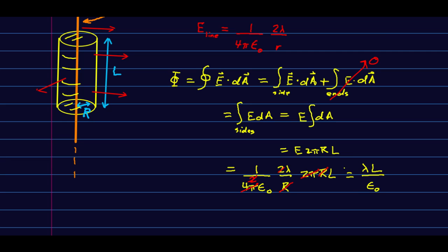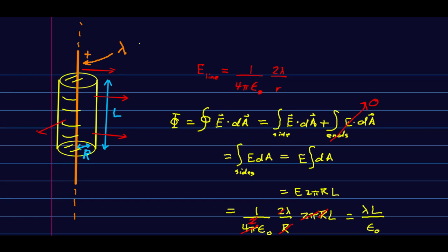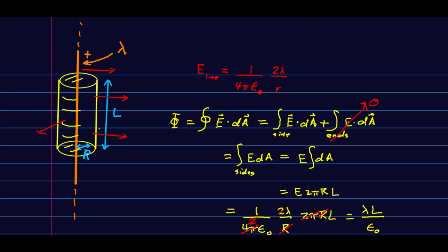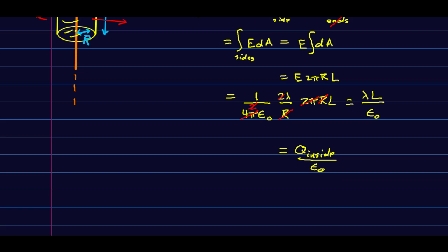And think about that lambda L. That is the linear charge density times the length of this cylinder, which means you could write that as q inside the cylinder. There's an infinite charge on the whole line. But just inside the cylinder, the amount of charge is just the length of this piece of cylinder times lambda. And so our flux has come out to be nothing more than how much charge is inside our surface divided by epsilon naught.